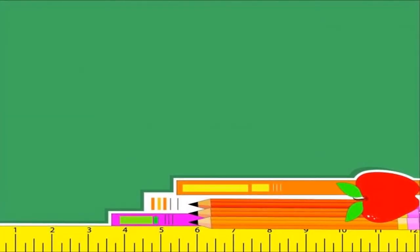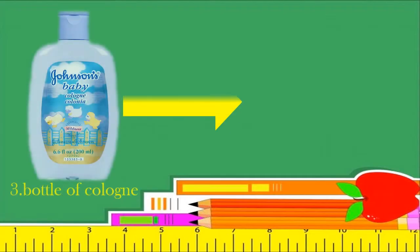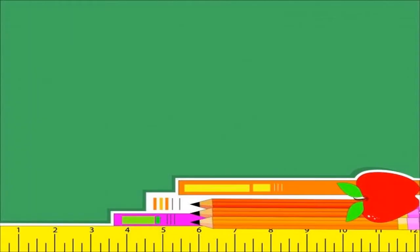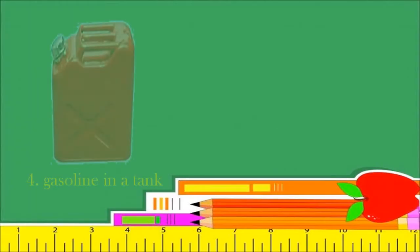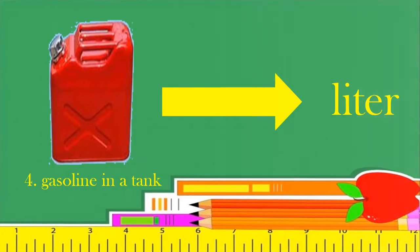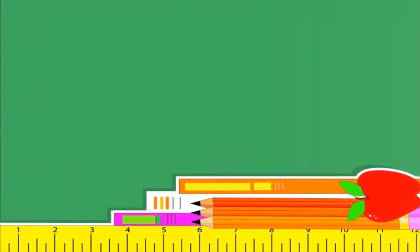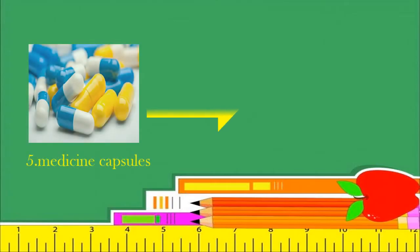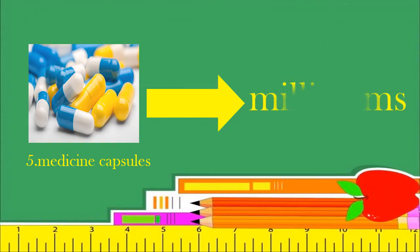Number three, bottle of cologne. If your answer is milliliter, very good, your answer is correct. Number four, gasoline in a tank. If your answer is liter, very good, your answer is correct. The last number is medicine capsules. If your answer is milligrams, very good, your answer is correct.